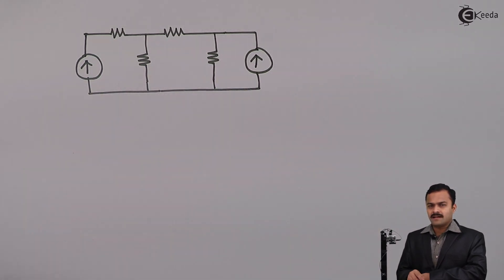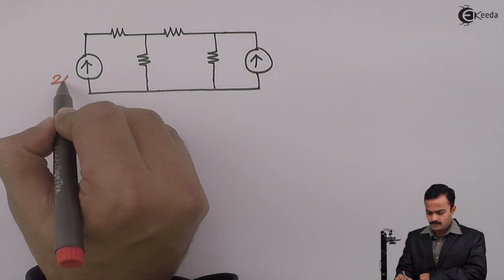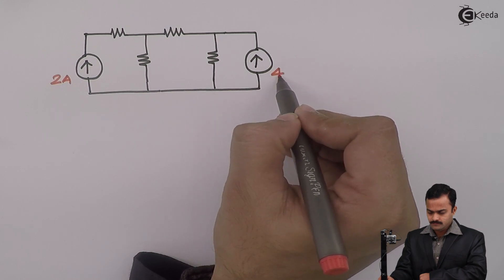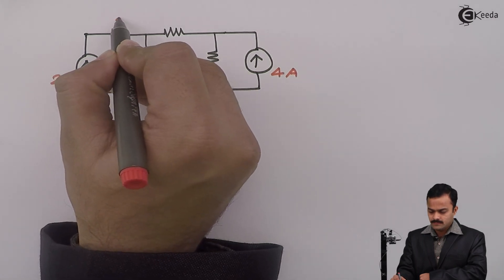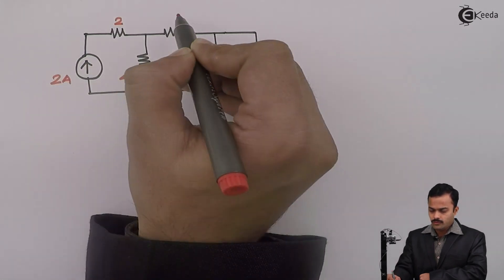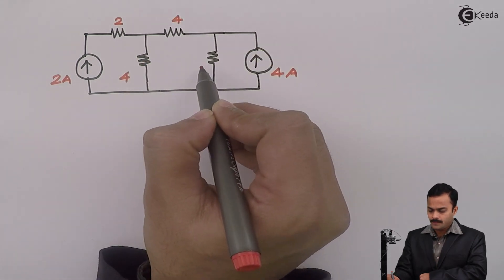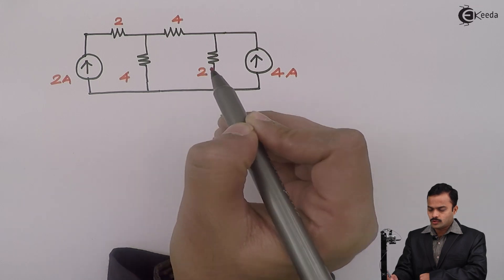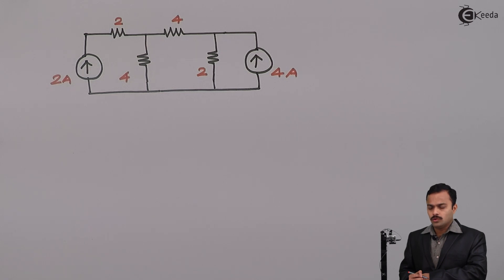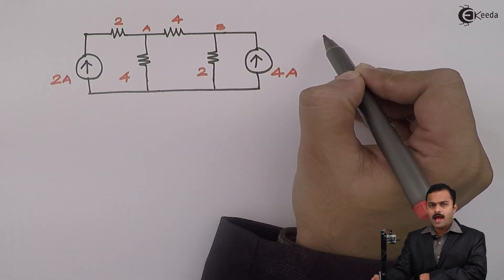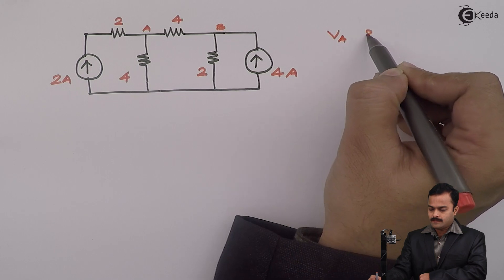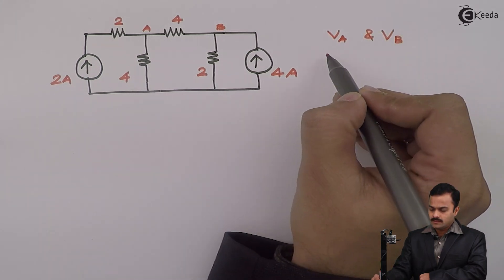In this problem, I am considering two current sources of 2A and 4A. The resistances are 2 ohm, 4 ohm, 4 ohm, and 2 ohm. The objective is to find out the voltages of nodes A and B — that is, VA and VB — using nodal analysis.